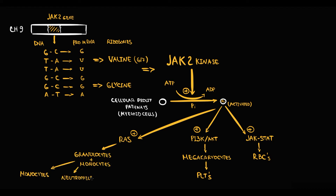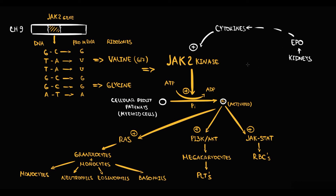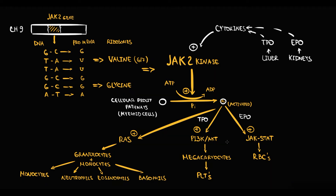In normal conditions, JAK2 kinase is active only when it receives a signal from cytokines. Kidneys produce erythropoietin, which stimulates red blood cell production. The liver produces thrombopoietin, which stimulates production of megakaryocytes from which platelets are formed. And the bone marrow microenvironment, by secretion of granulocyte-macrophage colony-stimulating factor, causes an increase in production of granulocytes and monocytes.